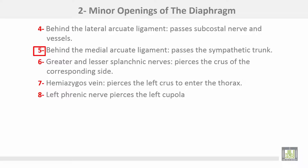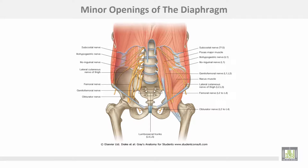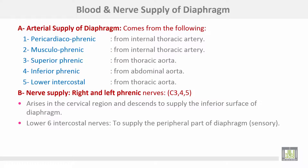Number five: behind the medial arcuate ligament passes the sympathetic trunk. Number six: the greater and lesser splanchnic nerves pierce the crus of the corresponding side. Number seven: the hemiazygos vein pierces the left crus to enter the thorax. Number eight: the left phrenic nerve pierces the left cupula of the diaphragm.